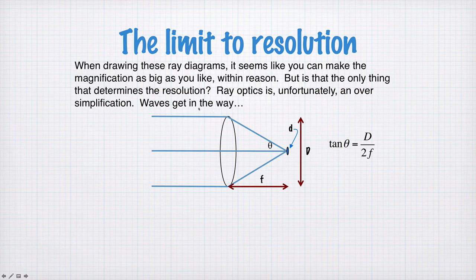Now the important thing to realize here is that ray optics is an oversimplification. So the resolution, that is the smallest spot you can make, is something you cannot determine with ray optics. You need to think about waves in order to figure out what the smallest resolution is.